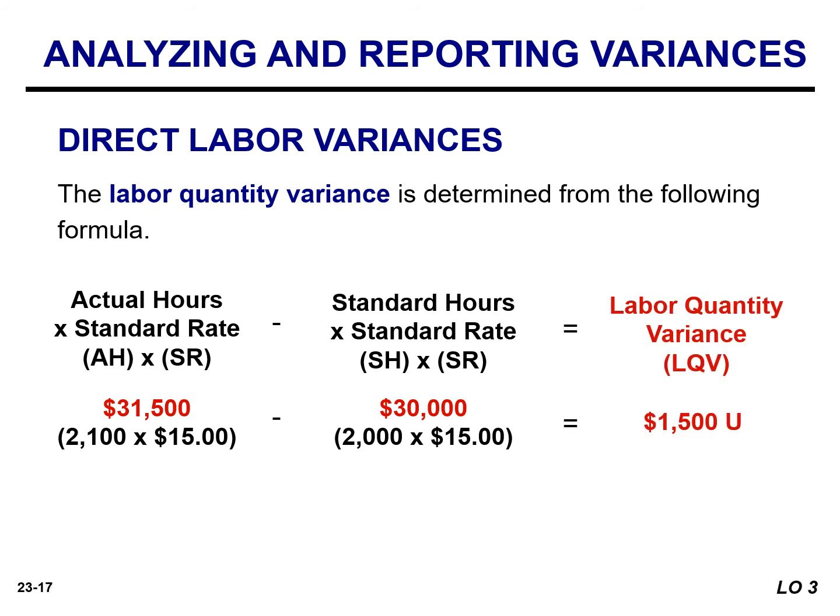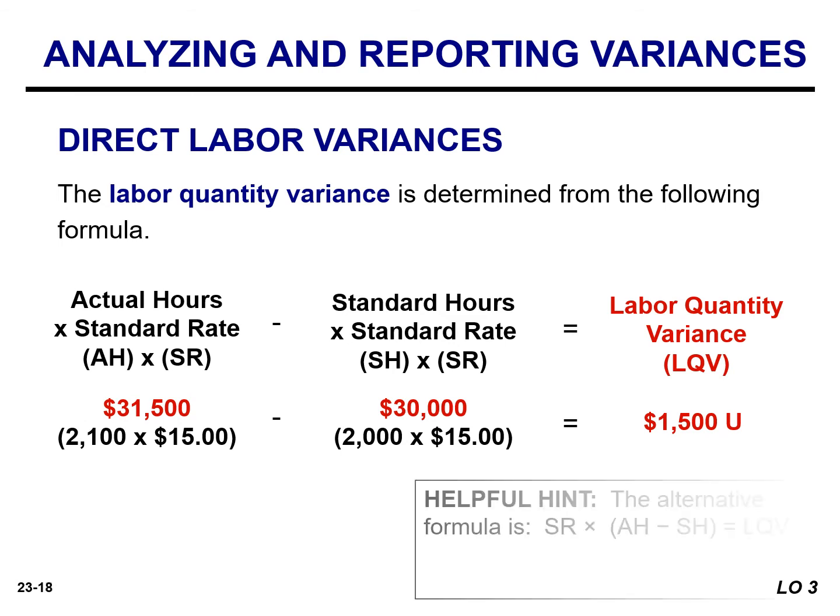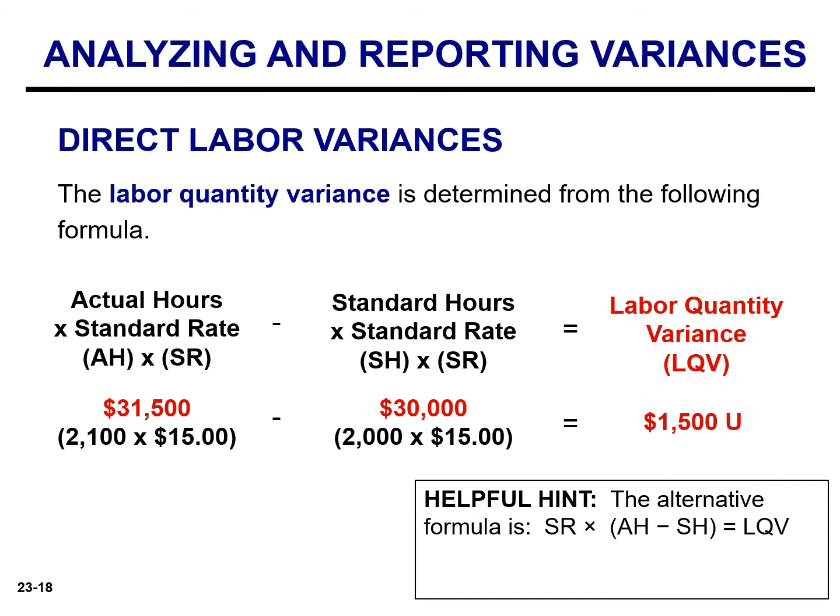The labor quantity variance is $1,500, and this variance is unfavorable because they used 2,100 hours to produce 1,000 units, while the standard called for 2 hours per unit, or 2,000 hours. The same result can be obtained by multiplying the standard rate of $15 by the difference between the actual and standard hours — in this instance 100 — to arrive at a variance of $1,500. This variance is unfavorable because the actual hours worked exceed the standard.